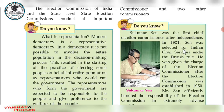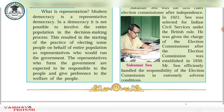Sukumar Sen was selected from the Indian Civil Service under British rule in 1921 — this means he was selected through the UPSC exam before independence. After independence, when the Election Commission was formed in 1950, he was given charge as Chief Election Commissioner. Mr. Sukumar Sen efficiently handled the responsibility of the Election Commission under extremely adverse conditions, facing many challenges.